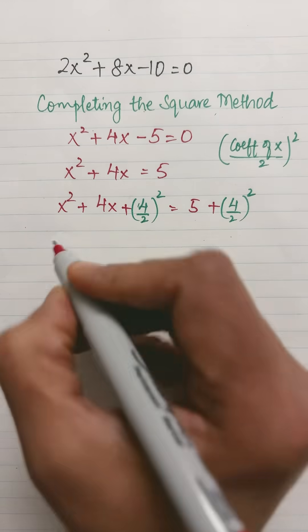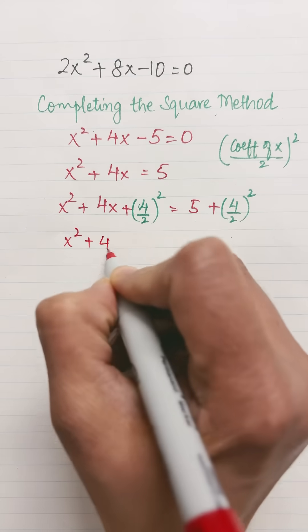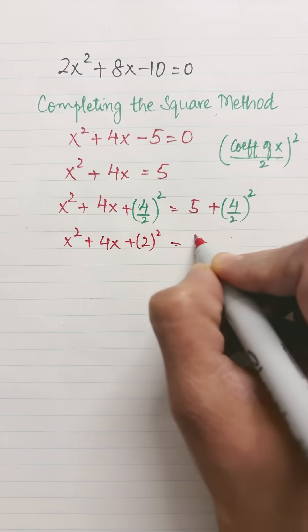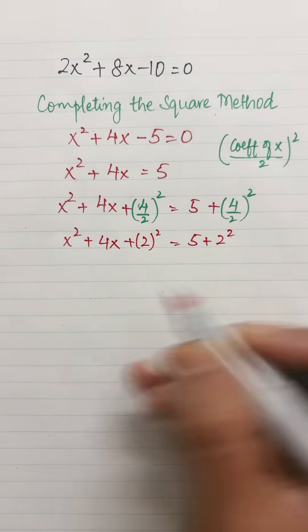Now it becomes x² + 4x. What is 4 divided by 2? It's 2 whole squared, equals 5 plus 4 divided by 2 is 2 squared.